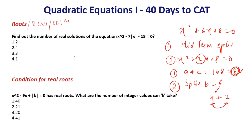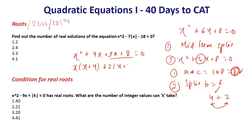So it becomes very easy. We write x² + 4x + 2x + 8 = 0. Taking x common gives x(x + 4), and taking 2 common gives 2(x + 4). Taking (x + 4) common from both: (x + 4)(x + 2) = 0. So the roots are x = −4 and x = −2. Middle term splitting is the fastest way to get to the roots of a quadratic.